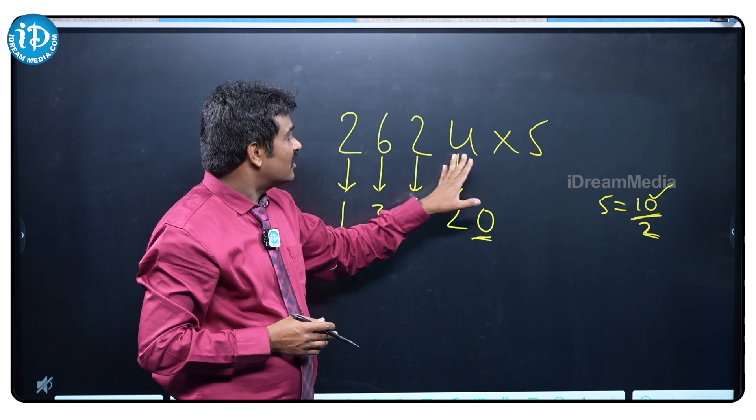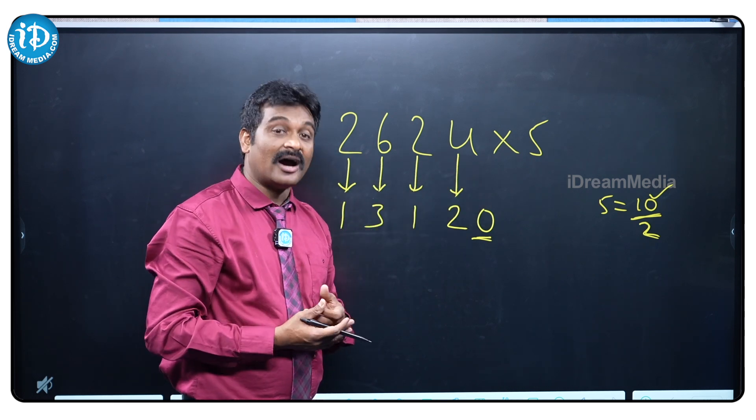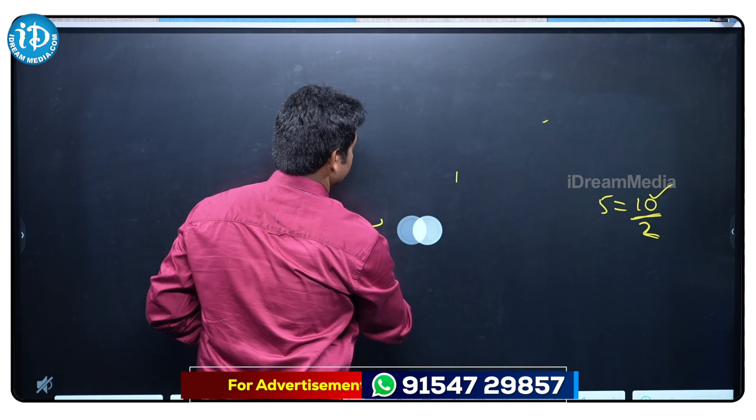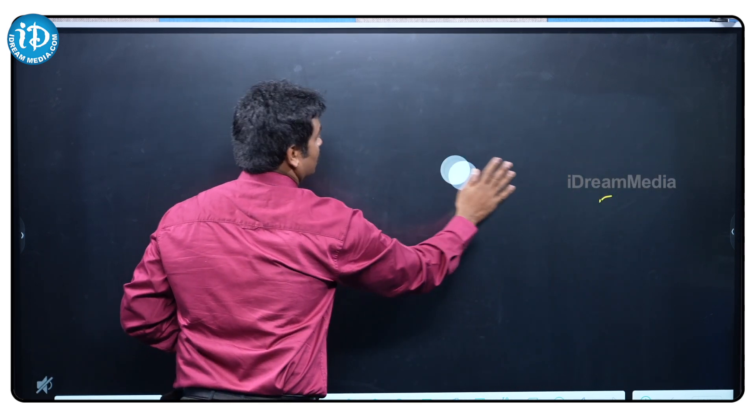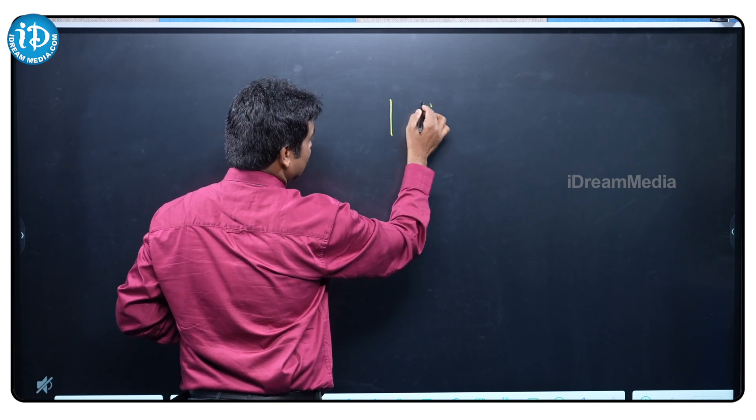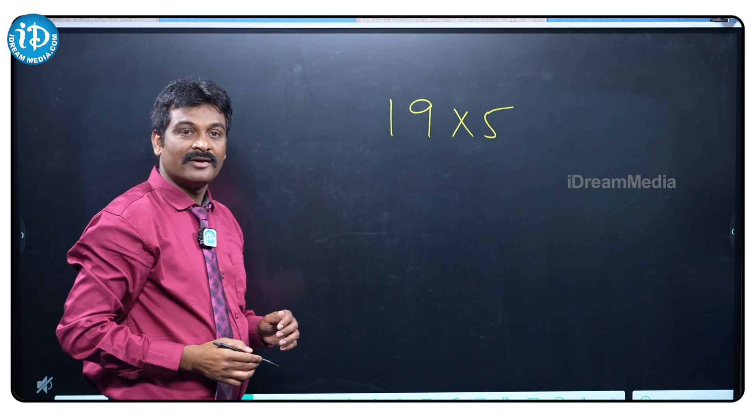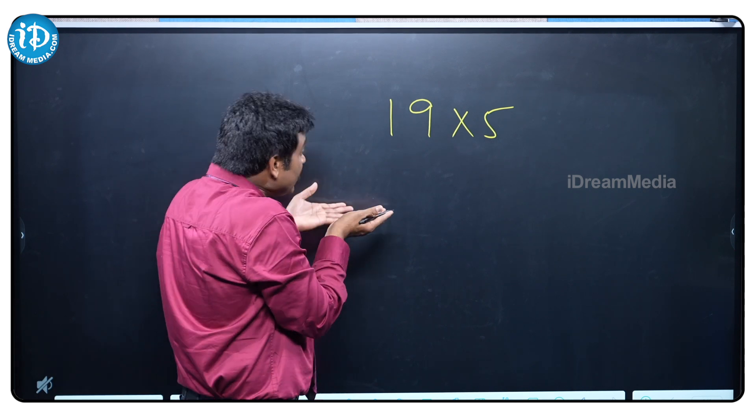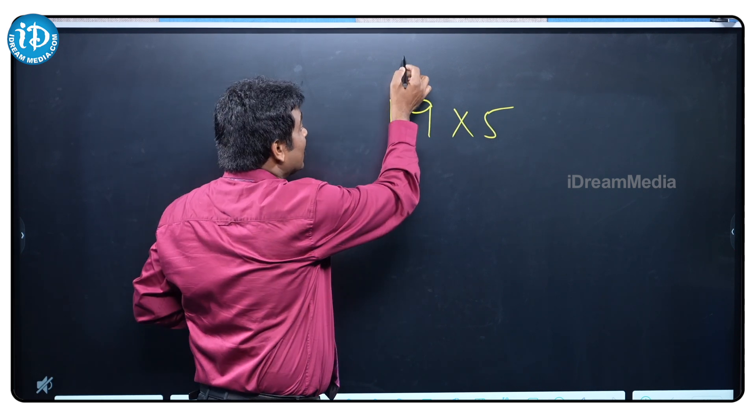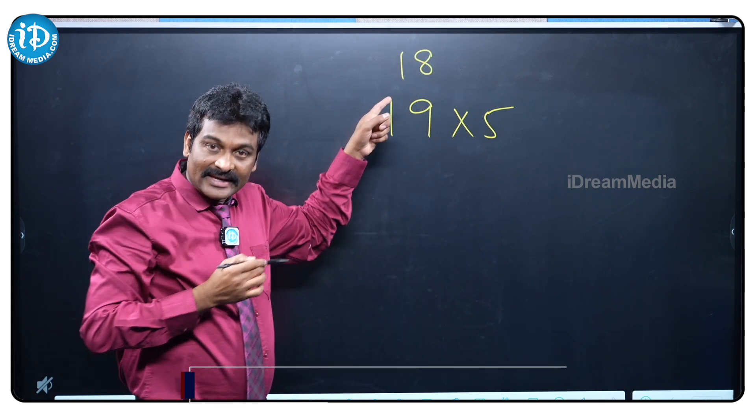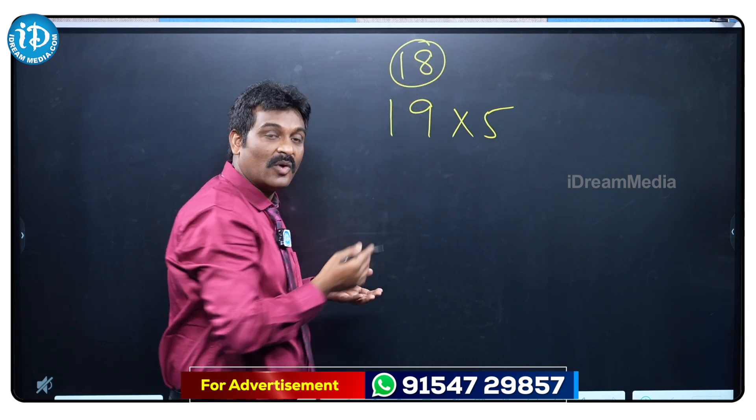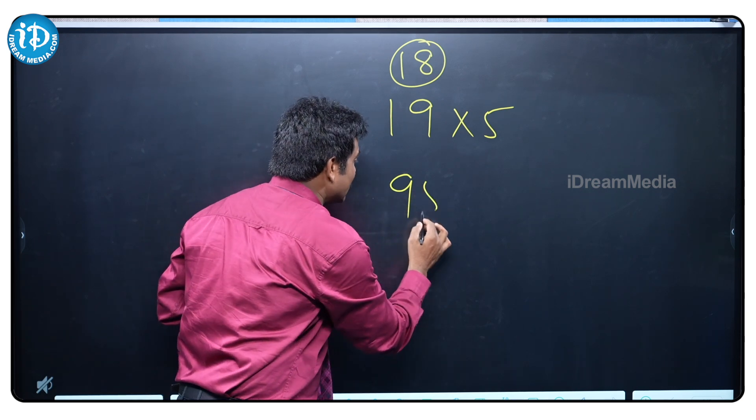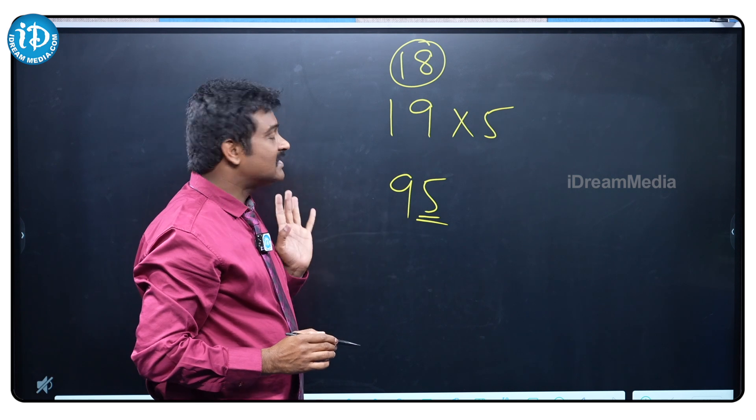Most of the students have a doubt, sir, these are all even numbers. In case if it is odd number, in that particular case what we need to do? I want to explain one better example. Suppose 19, 19 is an odd number. Before all numbers are even, but in this particular case 19 is odd number. In that case, you need to take below number of 19, immediately 18. What is the half of 18? 9. Write 9 immediately, attach 5, that's it. Your answer is 95.